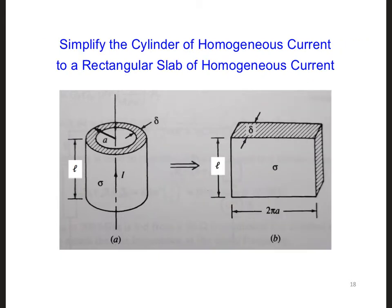We can further simplify the calculation by then approximating the homogeneous current along the outside of the dipole as an equivalent current flowing through a rectangular slab, like the one shown here, where the dimensions are L, the length of our dipole, by the circumference of the dipole, 2 pi A, where A is the radius of the dipole. And then the depth of our slab is one skin depth.